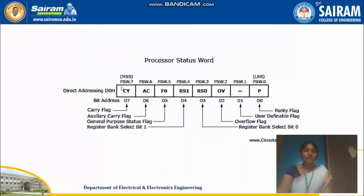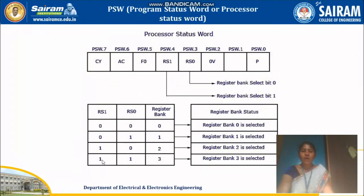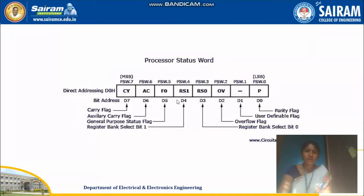AC is your auxiliary carry flag. Using bit addresses like PSW.0, PSW.1, PSW.2, PSW.3 it is possible to set or reset the carry flag. For example, if you write 'SETB PSW.4' and 'SETB PSW.3', it means RS1=1 and RS0=1, so register bank 3 will be selected. This is how you can utilize this processor status word.